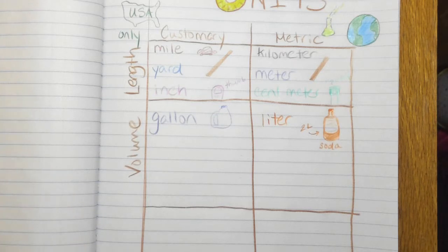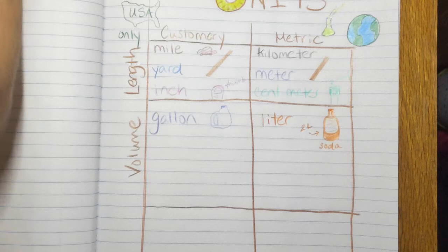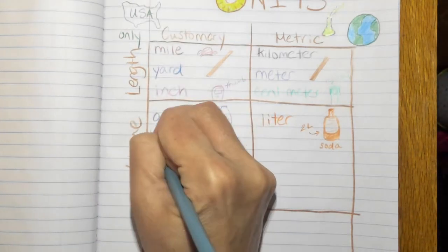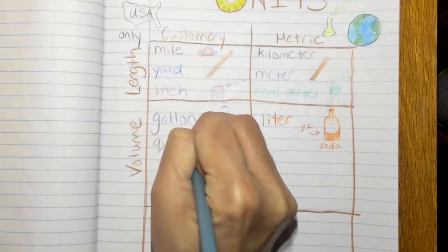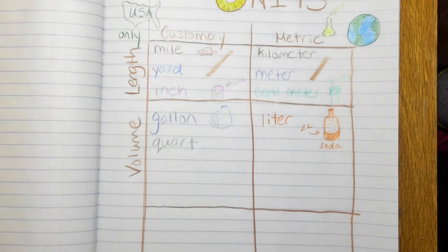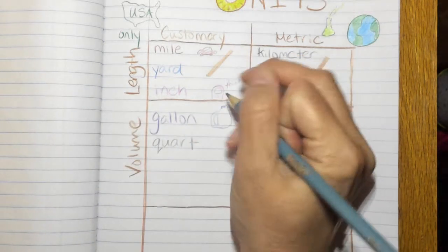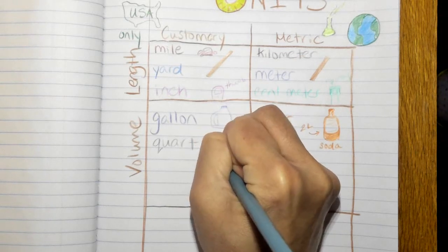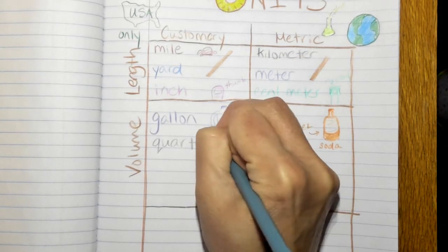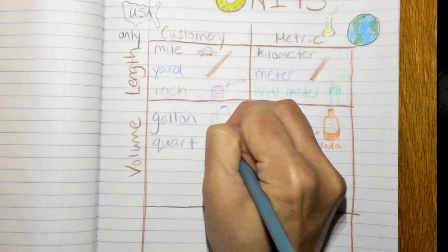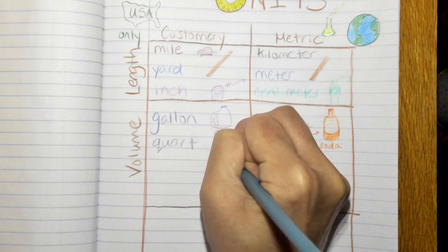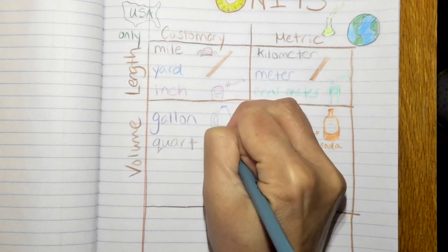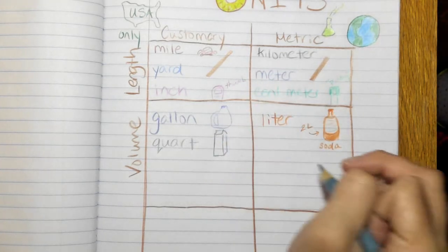And then on the customary side we have a quart. And that is like if you buy the milk, it's the tall one. You don't need a whole gallon, so that would be a quart of milk.